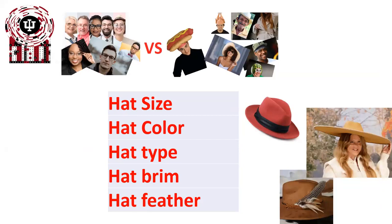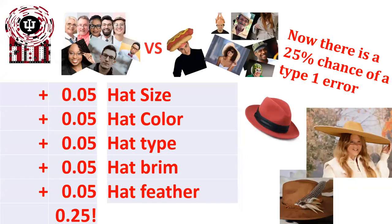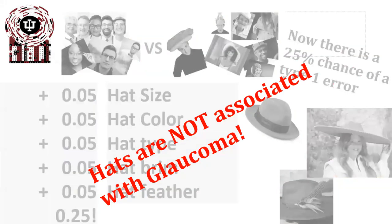We could compare multiple times. Maybe it's not just that they wear hats or not — maybe it's the hat size that causes glaucoma, maybe the hat color, maybe the hat type, the hat brim, or maybe even having feathers in their hat increases risk for glaucoma. Just so we're clear, in no situation do hats cause glaucoma. If we did five different comparisons, we'd increase our risk for a type 1 error for each comparison by 0.05, giving us a 25% chance of a type 1 error. Again, in no way do hats cause glaucoma — that is silly; it's just an example for this course.